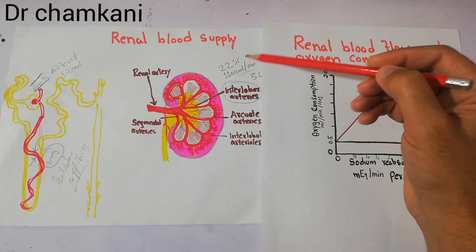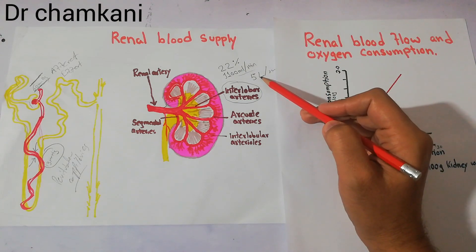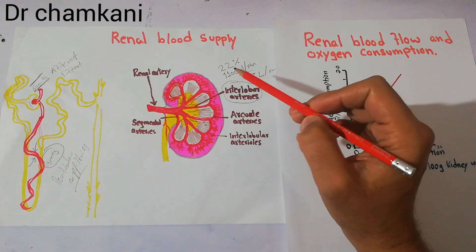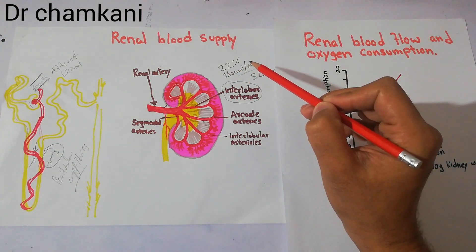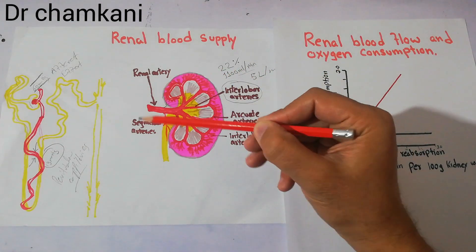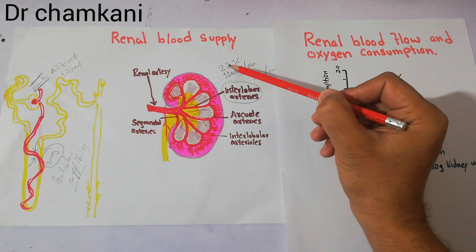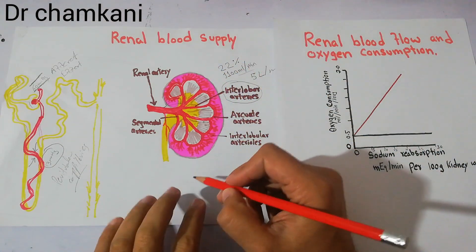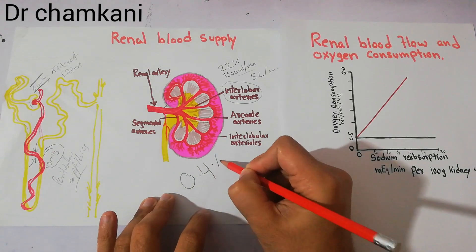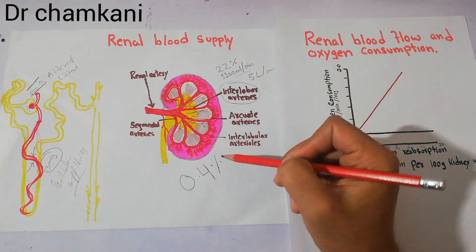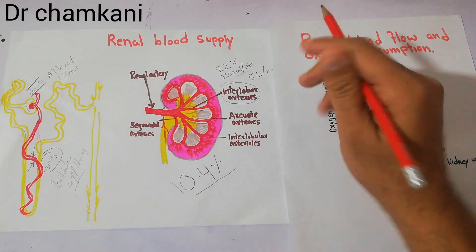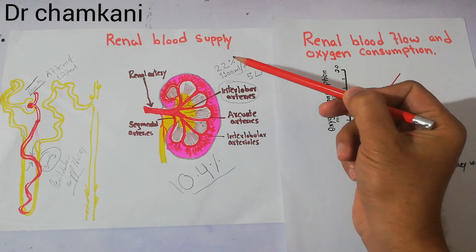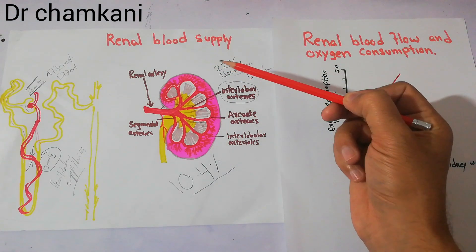If the human heart is pumping around 5 liters of blood per minute, around 1100 ml of blood per minute is being supplied to both kidneys. This makes it around 22%. Now if we talk about the weight of the human kidneys, it is around 0.4% of the body weight. So with just 0.4% of the body weight, both kidneys are receiving around 22% of the blood — a very large percentage.